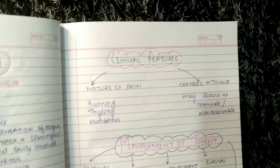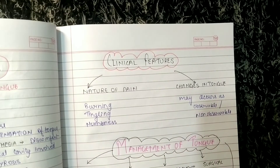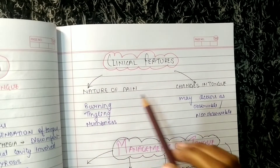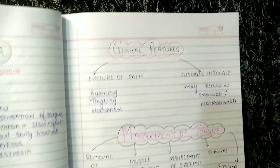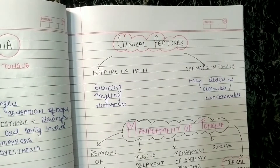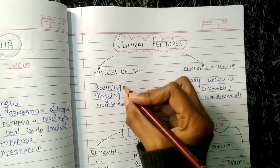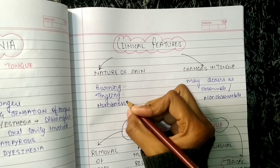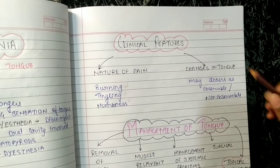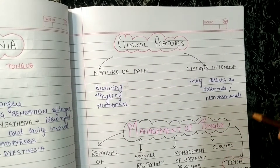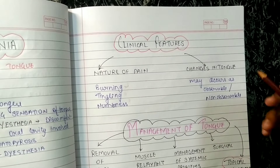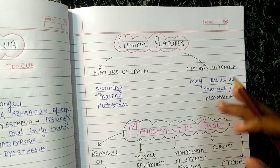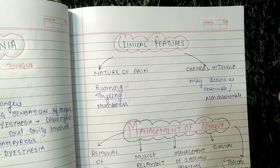Coming to clinical features, there are two types of changes: nature of pain and changes in the tongue. The nature of pain includes burning sensation, tingling, and numbness. Changes in the tongue may be observable or non-observable — some symptoms can be seen and some cannot.